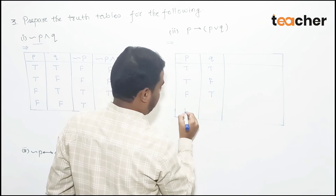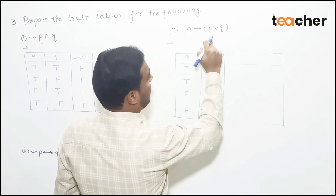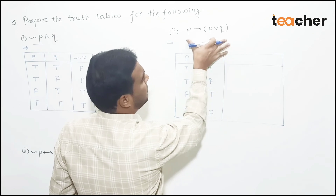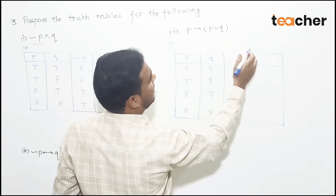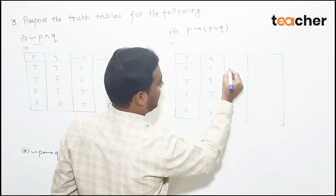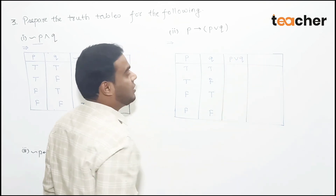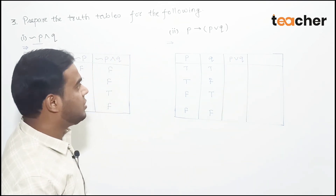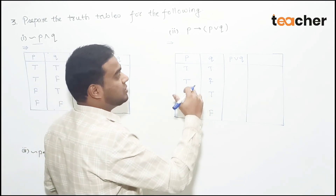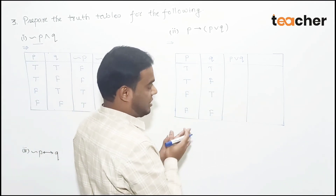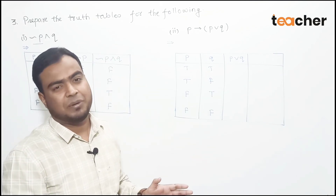Now we need to fill in the P disjunction Q column. For disjunction, if any one statement is true the result is true. We fill in the column for all four possibility rows: true/true gives true, true/false gives true, false/true gives true, false/false gives false.